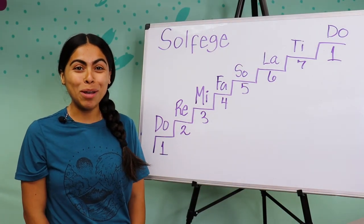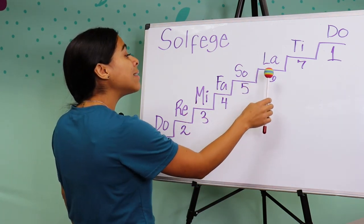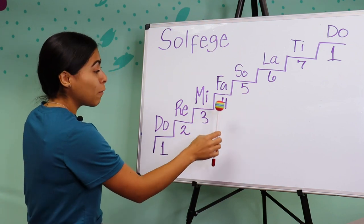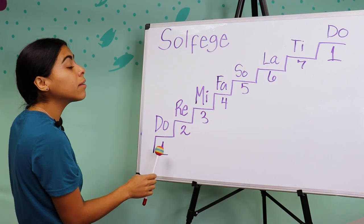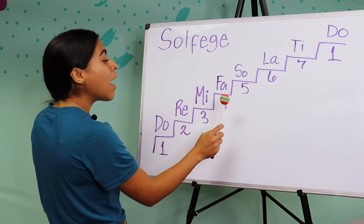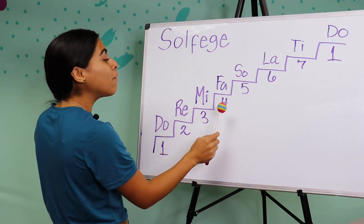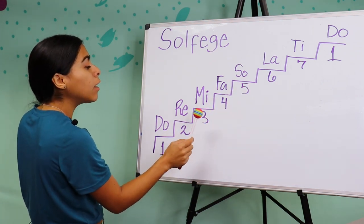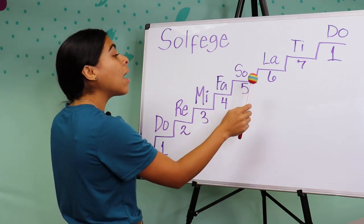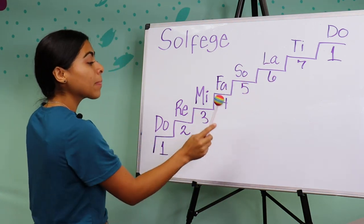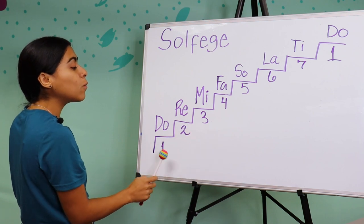Now let's try with numbers. One, one, five, five, six, six, five. Four, four, three, three, two, two, one. Five, five, four, four, three, three, two. Five, five, four, four, three, three, two. One, one, five, five, six, six, five. Four, four, three, three, two, two, one.